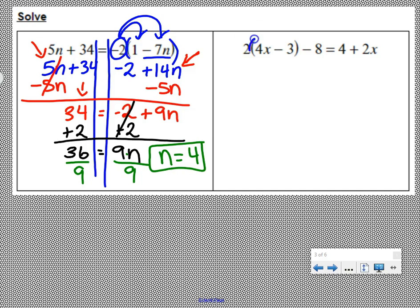Parentheses mean distribute. Distribute the two. We get 8x minus 6 minus 8 equals 4 plus 2x. Combine like terms. Negative 6 minus 8 is negative 14 equals 4 plus 2x. Make sure you bring down the 8x.